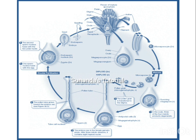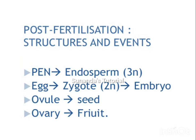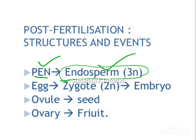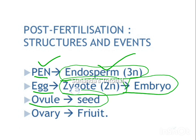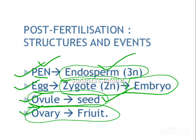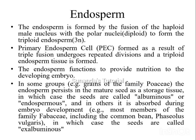This is the diagrammatic representation of different events occurring before and after fertilization. One male gamete fuses with the polar nuclei or secondary nucleus to form the primary endosperm nucleus, which finally develops into endosperm. The second male gamete fuses with the egg cell to form the zygote. The primary endosperm nucleus forms endosperm, which is triploid in nature. The zygote ultimately develops into the embryo. The ovule is transformed into the seed, and the ovary into the fruit.